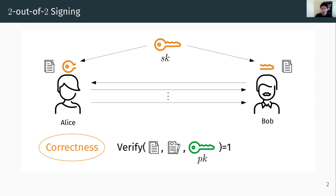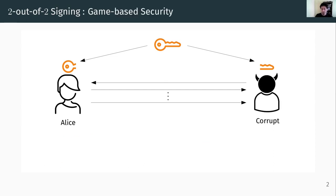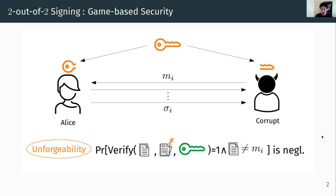What about the security? There are a few different ways to define security for two-out-of-two signing. We can extend the existing unforgeability game in a straightforward fashion. We assume that one of the parties is corrupted, and the adversary obtains a share of the secret signing key. The adversary is able to query the honest party with some message to be signed, and after some signature queries, outputs a forgery together with some message. The unforgeability requirement says the output message and signature should not be verified with the public key, as long as the message was never queried.